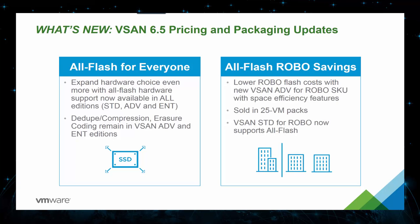To that end, we're cascading the all-flash hardware support down to vSAN Standard Edition, which means all versions of vSAN can now fully support all-flash hardware configurations at no extra charge. Note, however, that the all-flash-based efficiency features, such as dedupe, compression, and erasure coding, will remain in vSAN Advanced and Enterprise Editions only, allowing us to differentiate those editions with valuable software features. Even though all-flash will be supported in Standard, for any sizable all-flash configuration, customers should go with vSAN Advanced or Enterprise Editions.